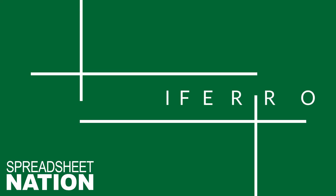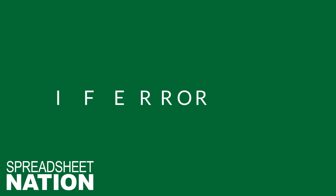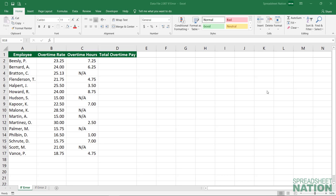Errors suck. If you work long enough in Excel, you're bound to get some errors. These could happen if you try and do calculations on text, you have a bad lookup reference, or lots of other reasons. Getting errors messes up formulas and other references, so the IFERROR function can help us out.